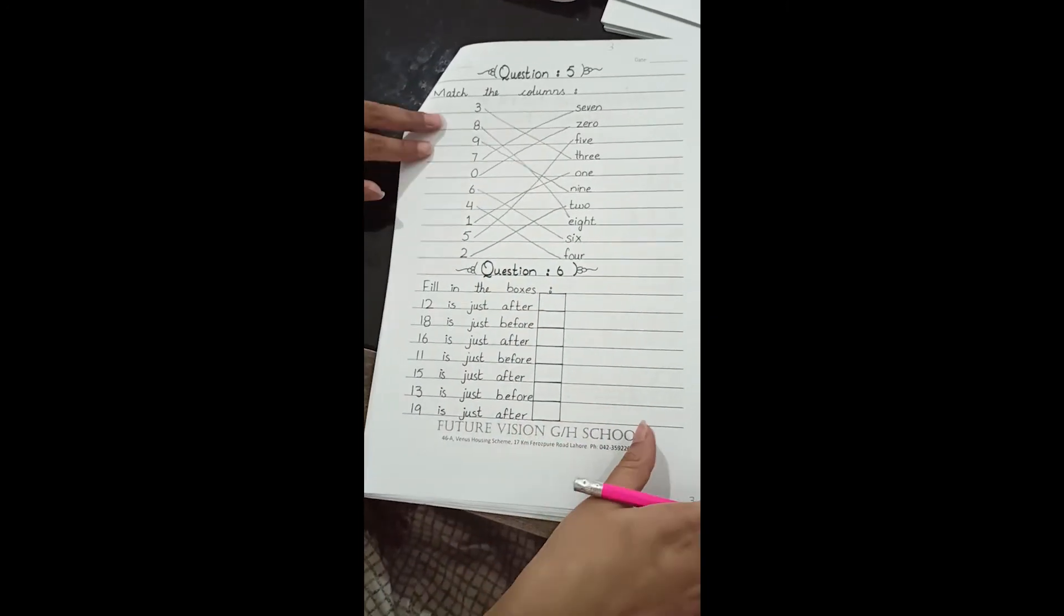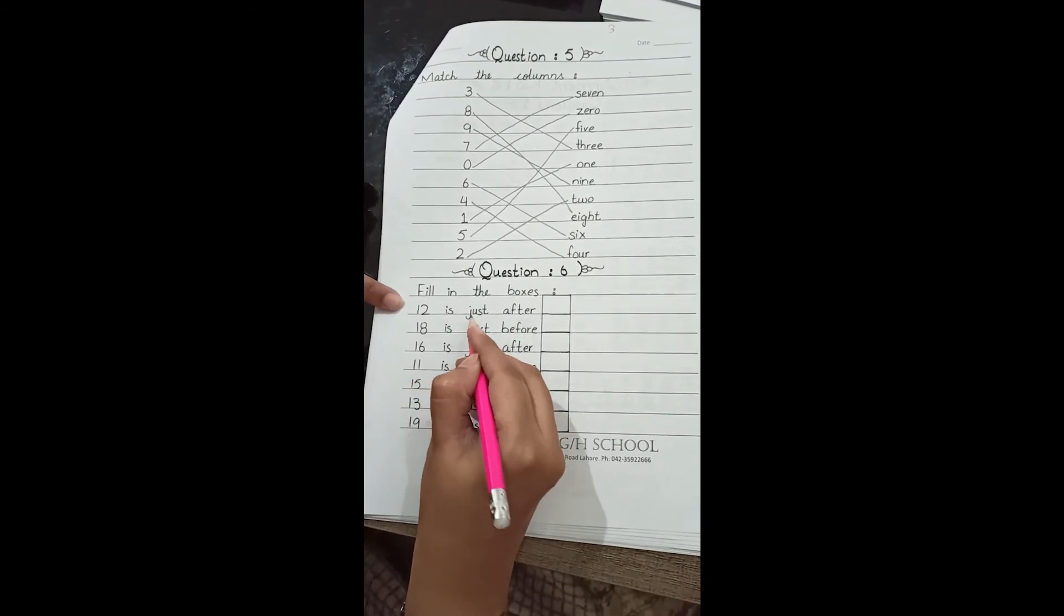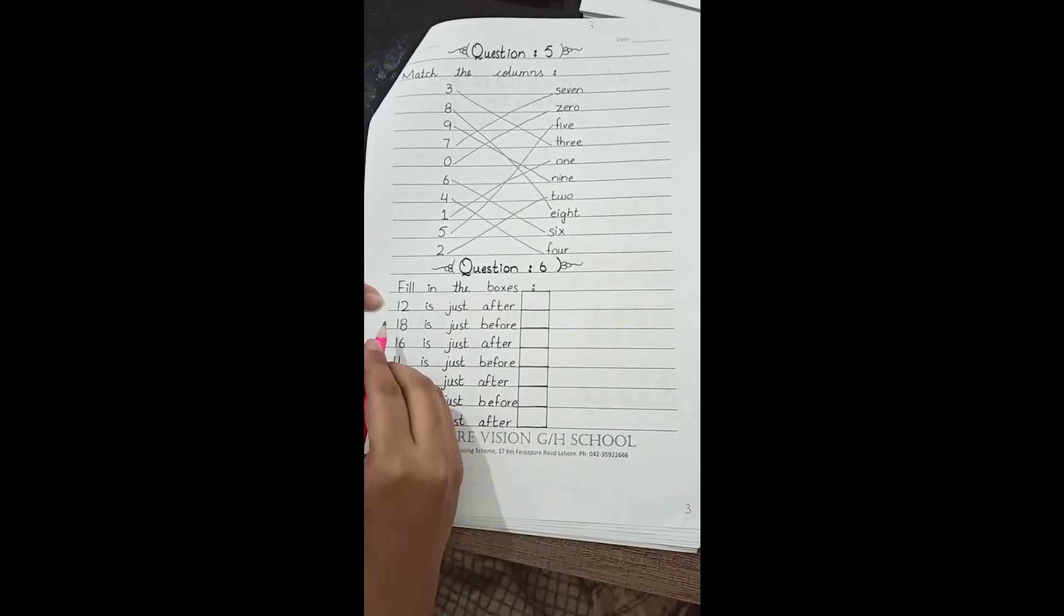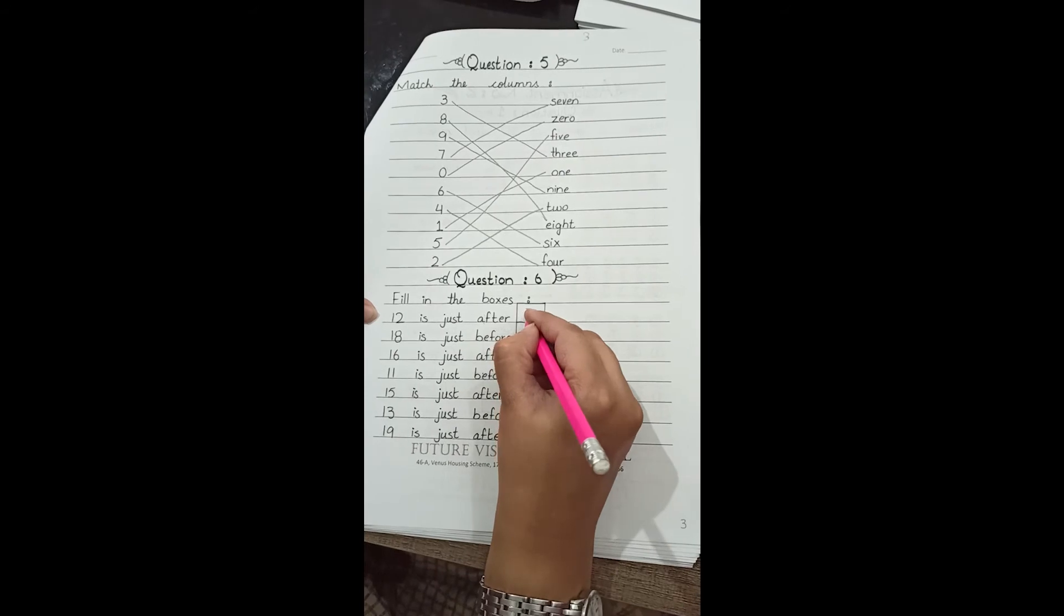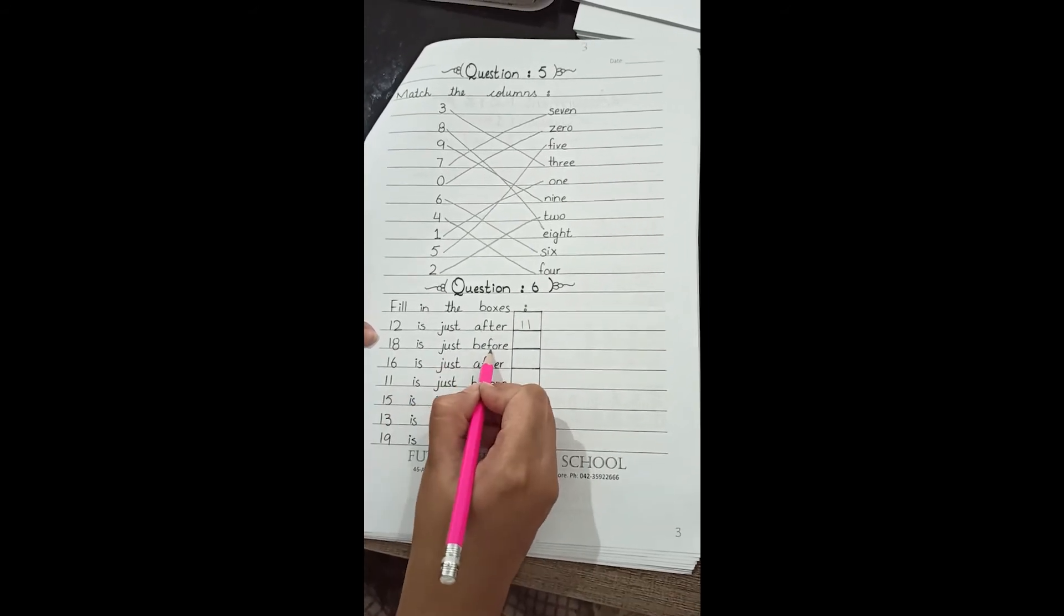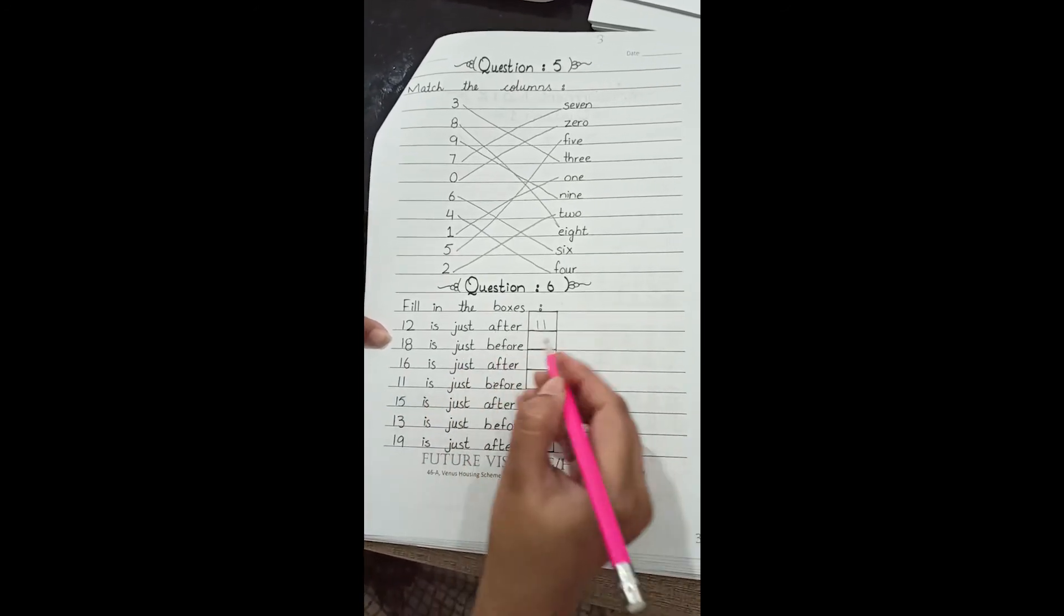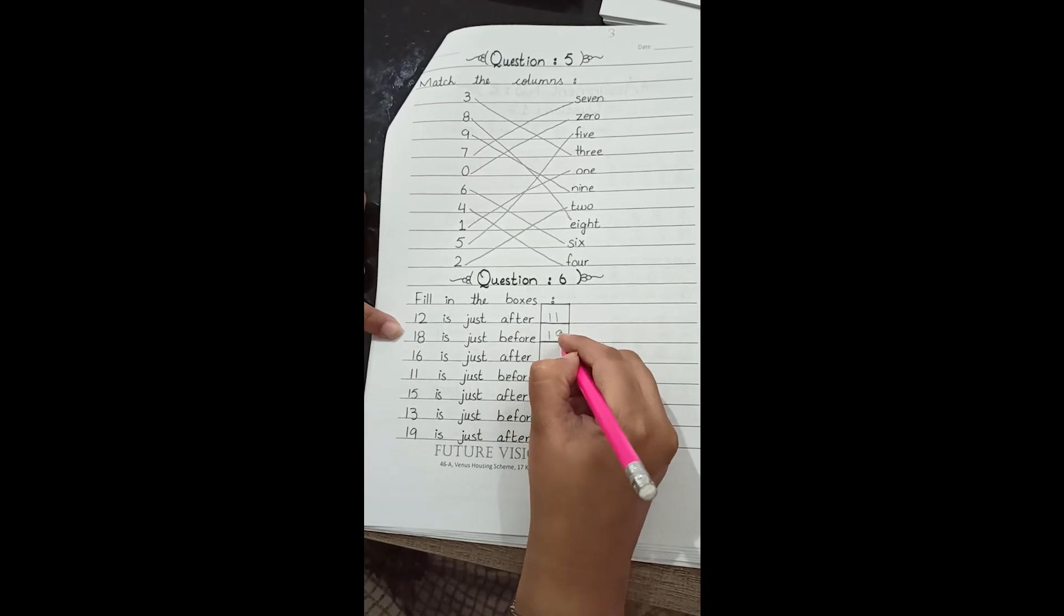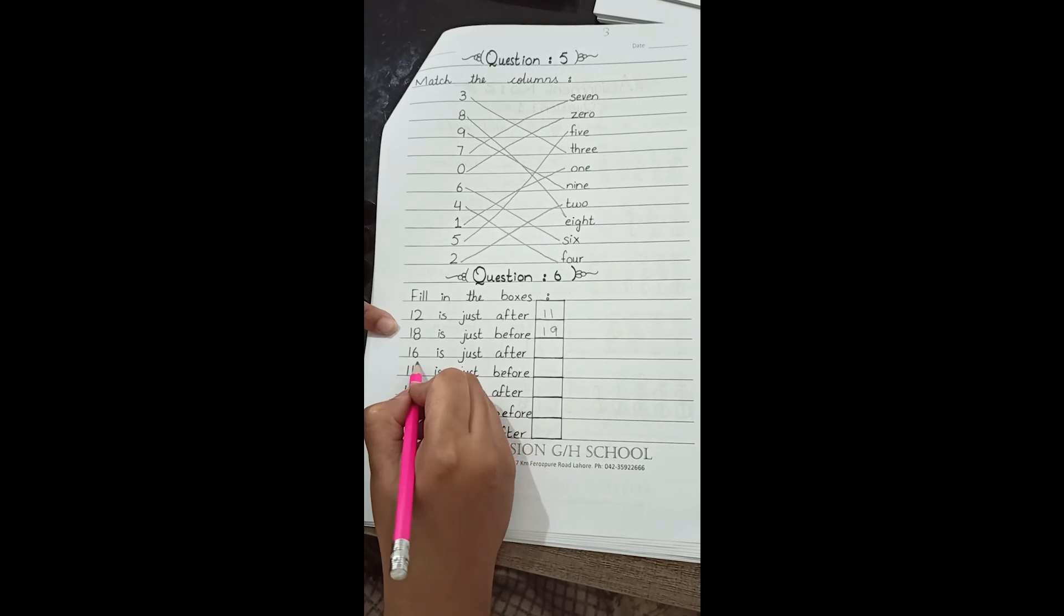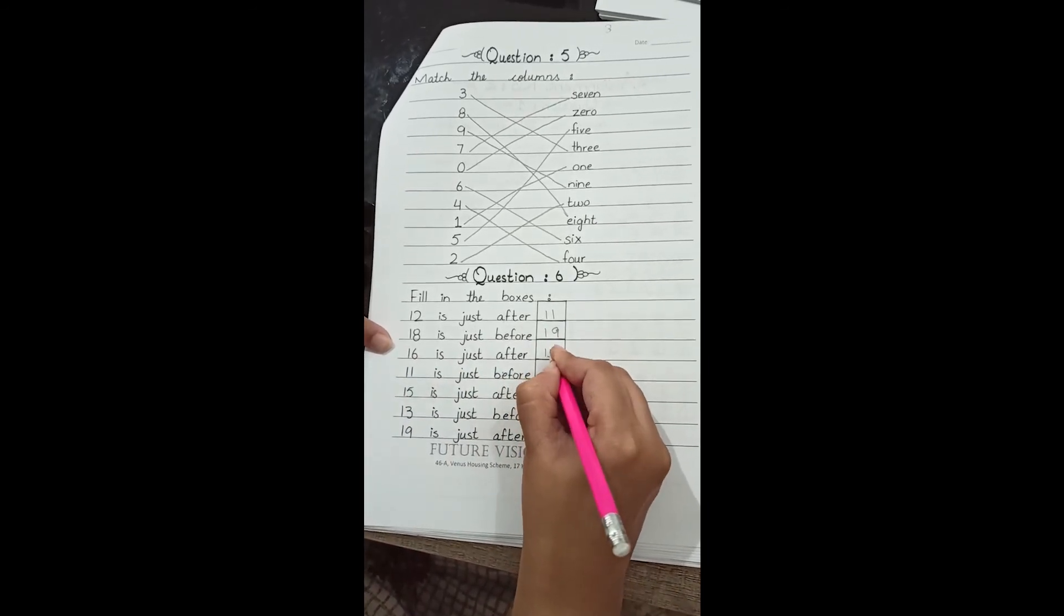Now moving towards question number 6: fill in the boxes. 12 is just after what? 12 is just after 11. Very good. 18 is just before what? 18 is just before 19. Here is 19. 16 is just after 15. Very good.